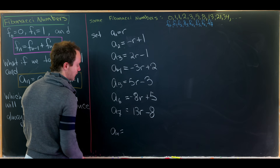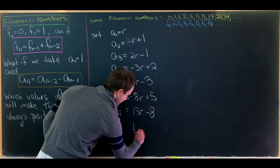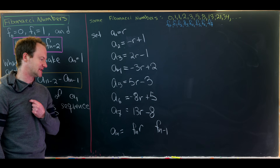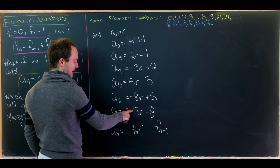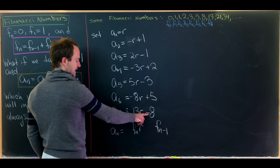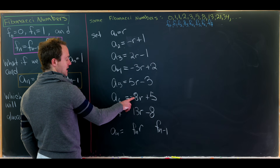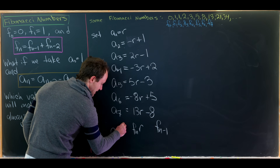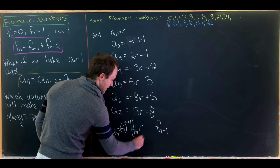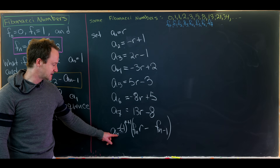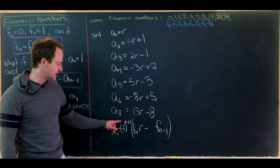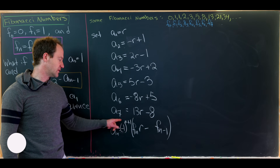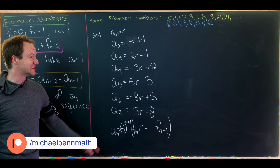Let's guess a closed form for a_n. It looks like it should be F_n times r minus F_{n-1}, with alternating signs. We get a plus sign with odd indices and a minus sign with even indices for the leading coefficient. So the best way to write this is: a_n = (-1)^{n+1} * (F_n * r - F_{n-1}).